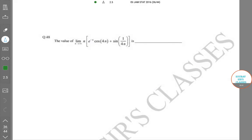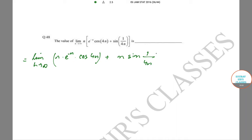The value of limit as n goes to infinity of n·eⁿ·e⁻ⁿ·cos(4n) + sin(1/4n) is... So this is equal to limit n goes to infinity of n·e⁻ⁿ·cos(4n) + n·sin(1/4n).